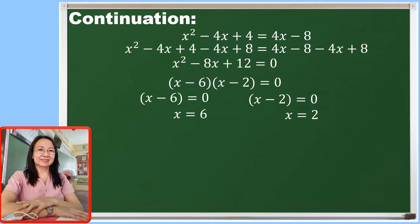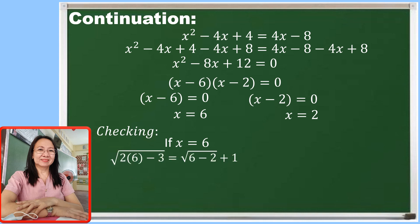So which of the two values are the solution of the radical equation? To answer this, let us do the checking. If the value of x is 6, let us substitute 6 in the given equation. So 2 times 6 is 12, and 12 minus 3 is 9. We have the square root of 9. And the square root of 6 minus 2, which is 4, is on the right side, plus 1. Getting the square root of 9 which is 3, and the square root of 4 is 2 plus 1 is also 3. So we accept x equals 6 as part of the solution.